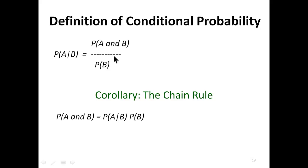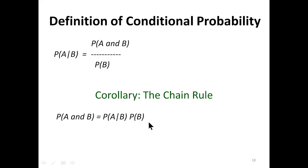The definition of conditional probability: P of A given B is the probability of A and B over probability of B. Using the chain rule, we can say P of A and B equals P of A given B multiplied by probability of B. So we can replace with the conditional probability multiplied by P of B — that is how mathematically we express it.